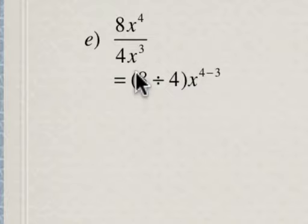So then this is going to be, to divide the coefficients, 8 divided by 4, and x to the power of 4 divided by x to the power of 3. The base is x, so we subtract the exponents, which is 4 minus 3.